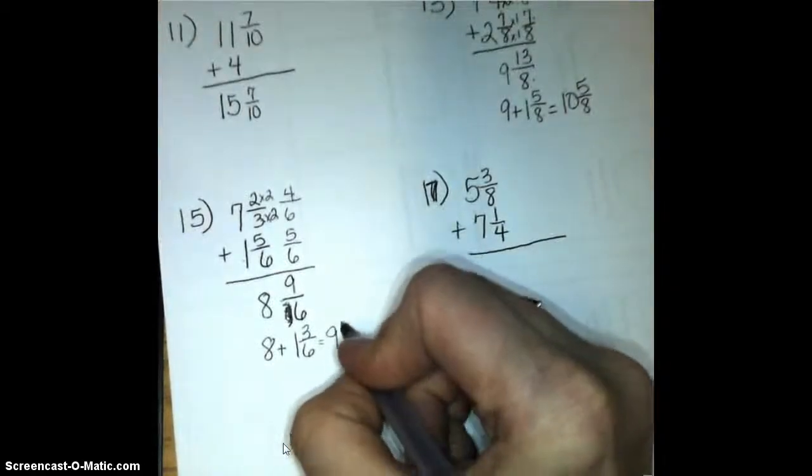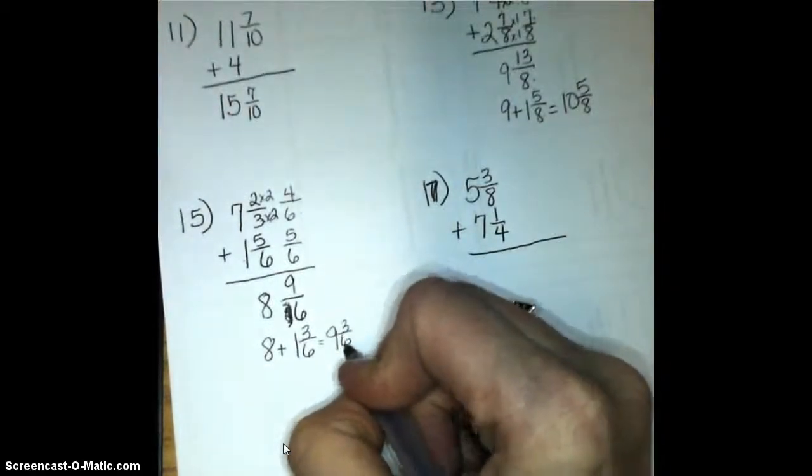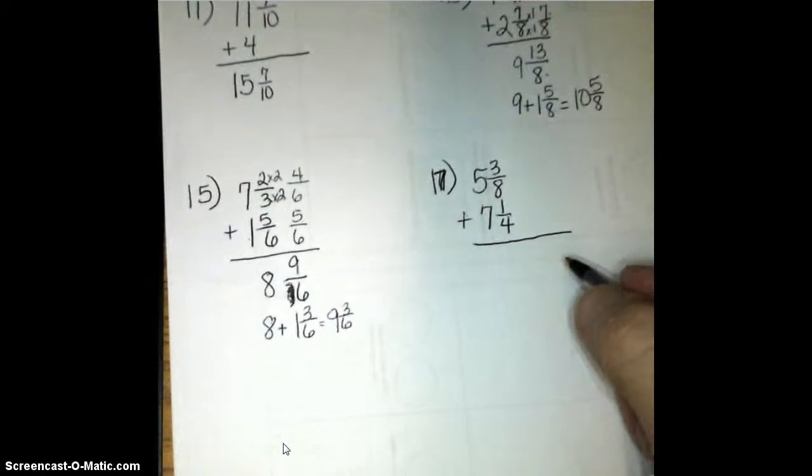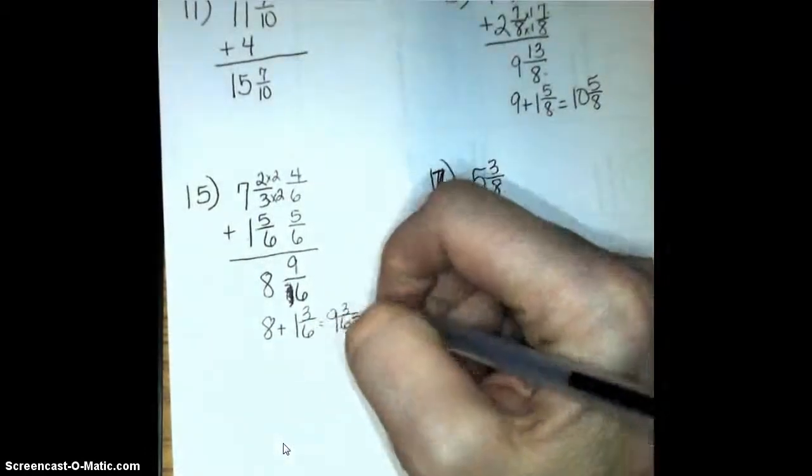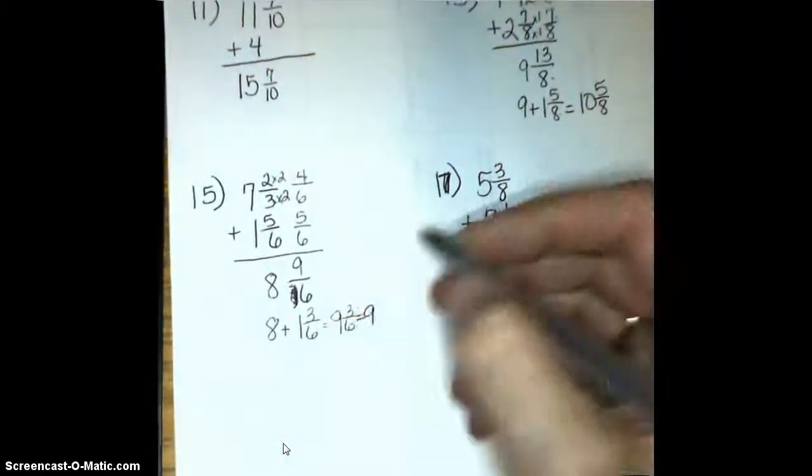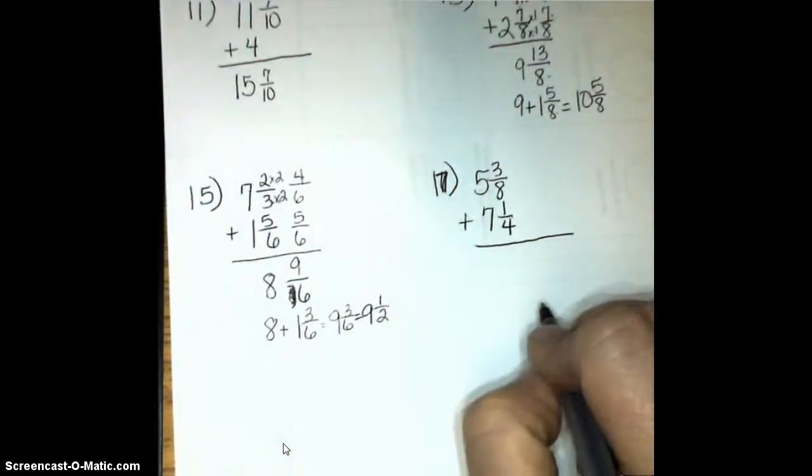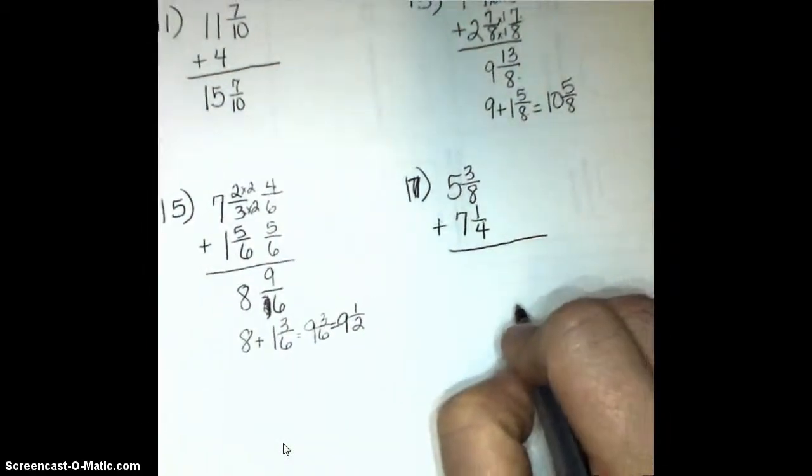When I add them together, I get 9 and 3 sixths. There's still something wrong. It's not in its simplest form. We always want to ask ourselves, is this in simplest form? And the answer is no. 3 sixths is the same as 1 half, dividing by 3 there on both of those.